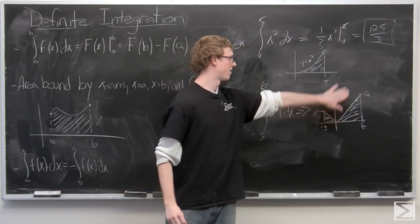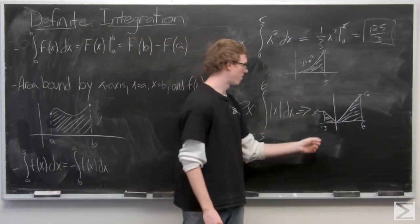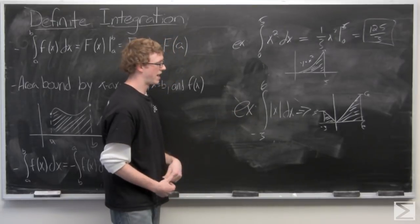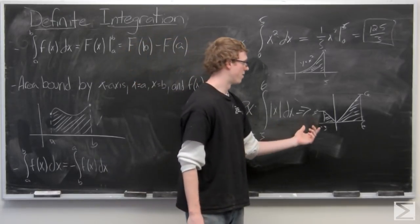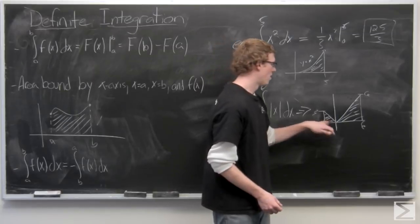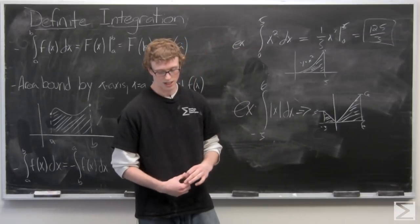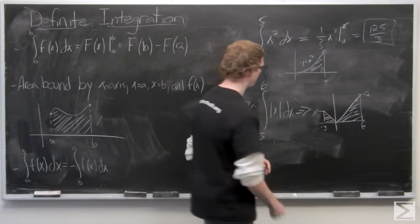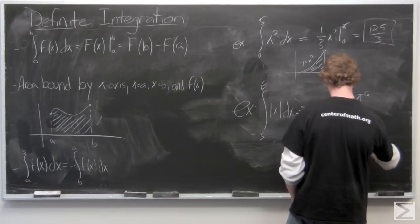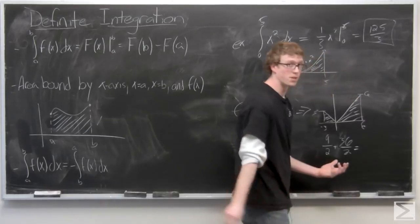Now, knowing that this is y equals negative x and this is y equals x, we actually could break this into two separate integrals. One from negative 3 to 0 of negative x and one from 0 to 6 of positive x. But we know that it's that area, so we can just calculate the area of those two triangles. The area of a triangle is 1 half base times height. So for this side, we have 1 half times 9, which is 9 halves. And for this side, we have 1 half times 36, which is 18. Or we can just leave it as 36 over 2 and perform the addition 45 over 2.